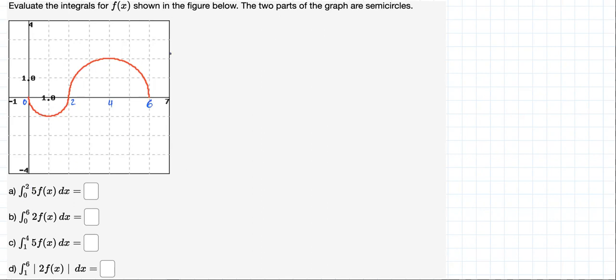Alright, they want us to compute first a, the integral from 0 to 2 of 5 times f dx. Okay, so based on the constant multiplier property for integrals, we can say that this is just 5 times the integral from 0 to 2 of f dx.